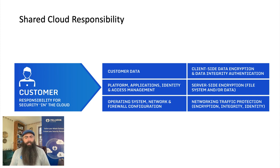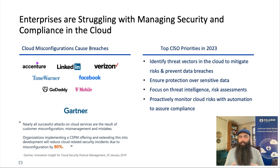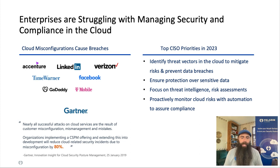Being on the cloud opens up all kinds of new threat vectors. AWS gives some broad examples of what you need to secure, but this list is really just the start. That fantastic time to first value from using dynamic cloud environments means it's also really easy to misconfigure or lose track of things. The data shows that enterprises are struggling with managing security and compliance inside of their cloud. Gartner reported that nearly all successful attacks on cloud services result from customer misconfiguration, and they estimate enterprises could avoid 80% of misconfigurations by adopting security posture management over their clouds.